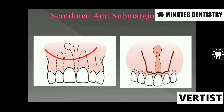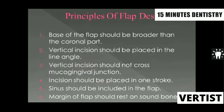To prevent gingival recession, the recent modification is the submarginal flap, where the horizontal incision, instead of being placed along the circular sulcular region, is always placed 5mm away from the marginal gingiva, so that recession can be avoided. When developing these flaps, we have to remember a few principles that we will discuss.